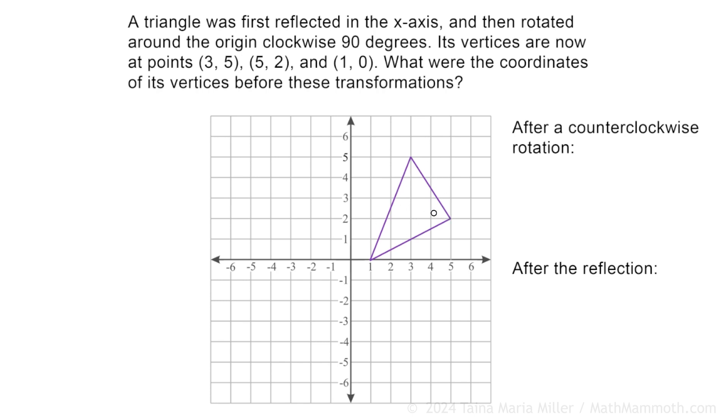So when we go backwards, we first rotate counterclockwise. It goes somewhere there. Then there was a reflection in the x-axis. So we do that backwards. It goes somewhere here. It ends up here in the third quadrant.